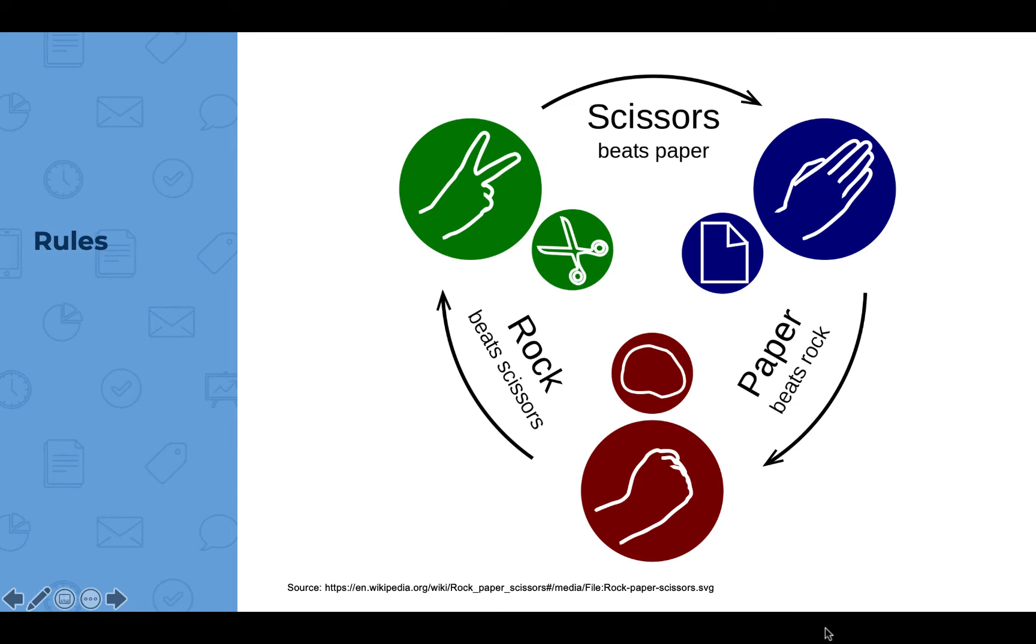It's a two-player game. There are three elements in the game, namely rock, paper and scissors. So the rules are rock crushes scissors, scissors cut paper, paper covers rock.